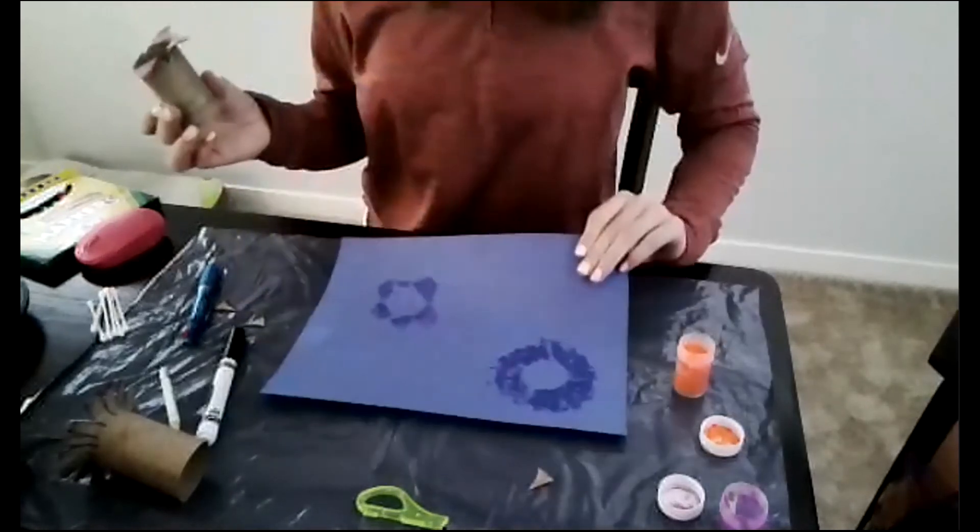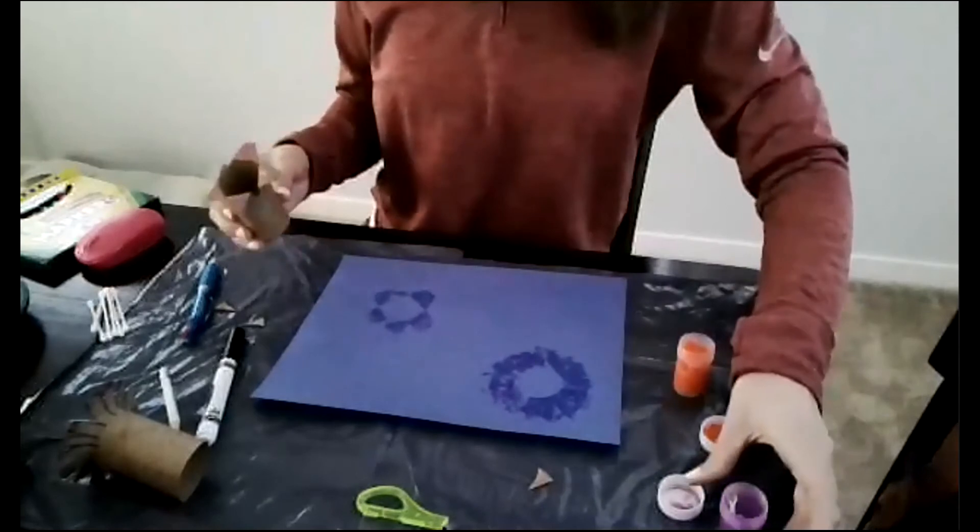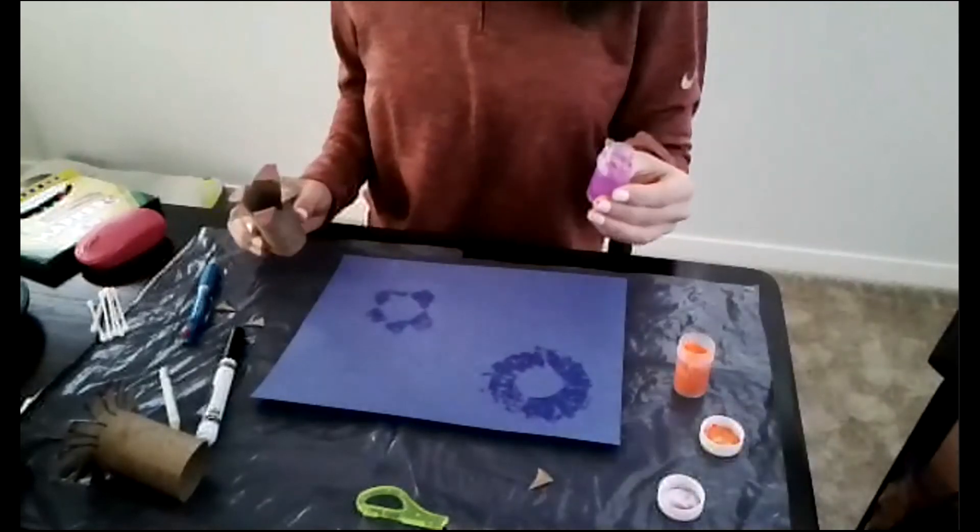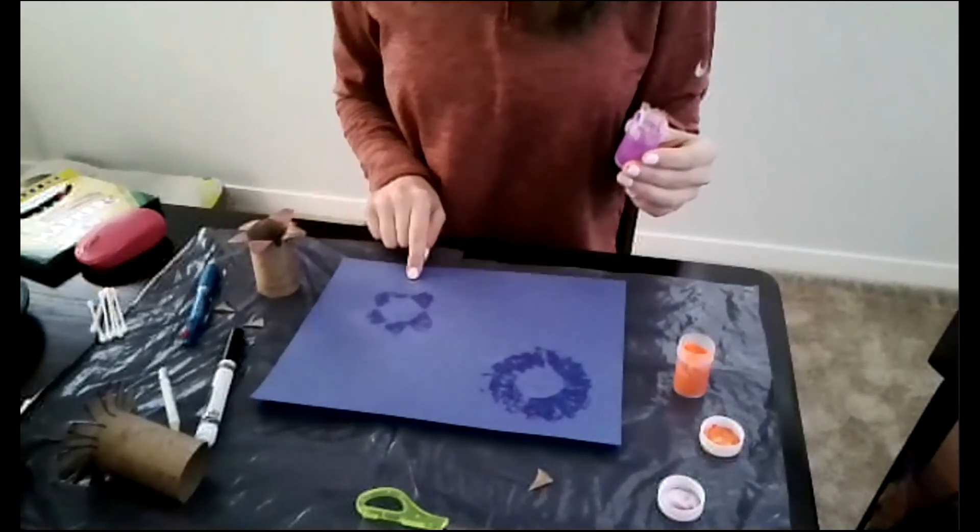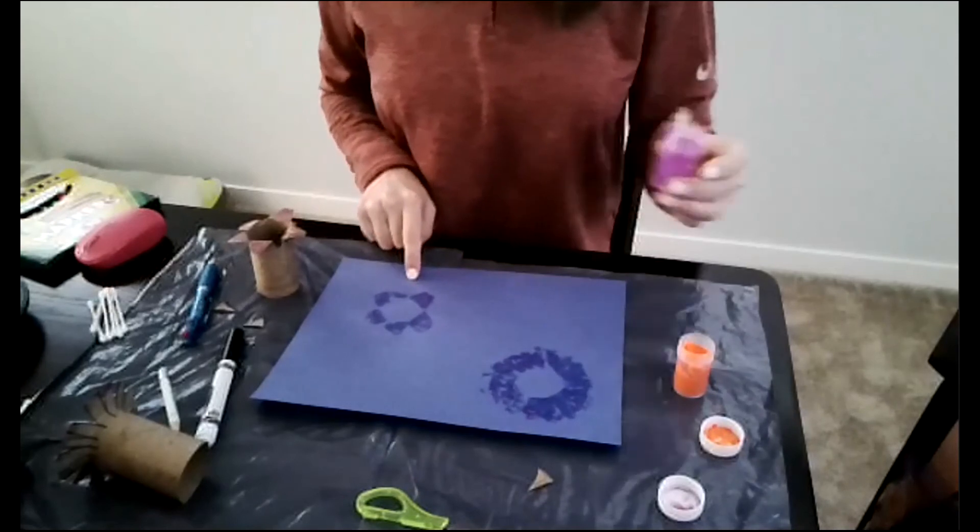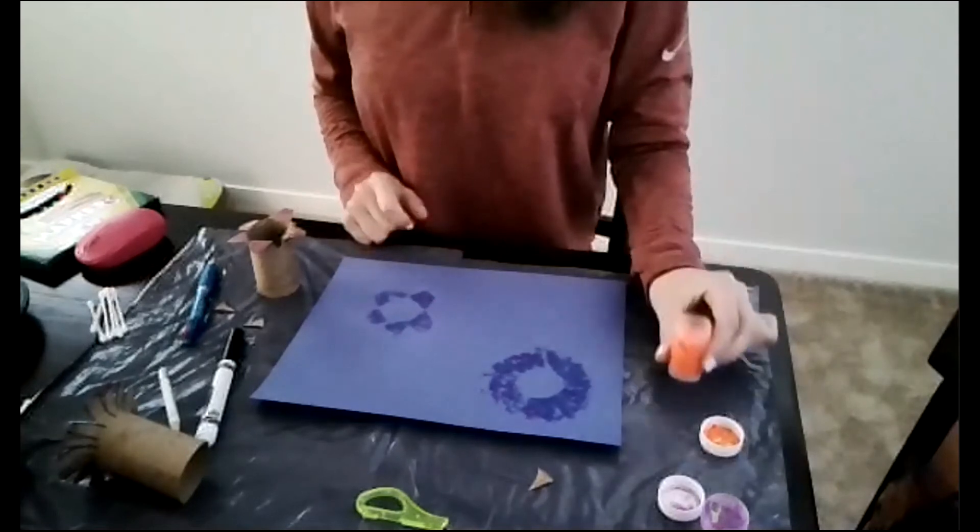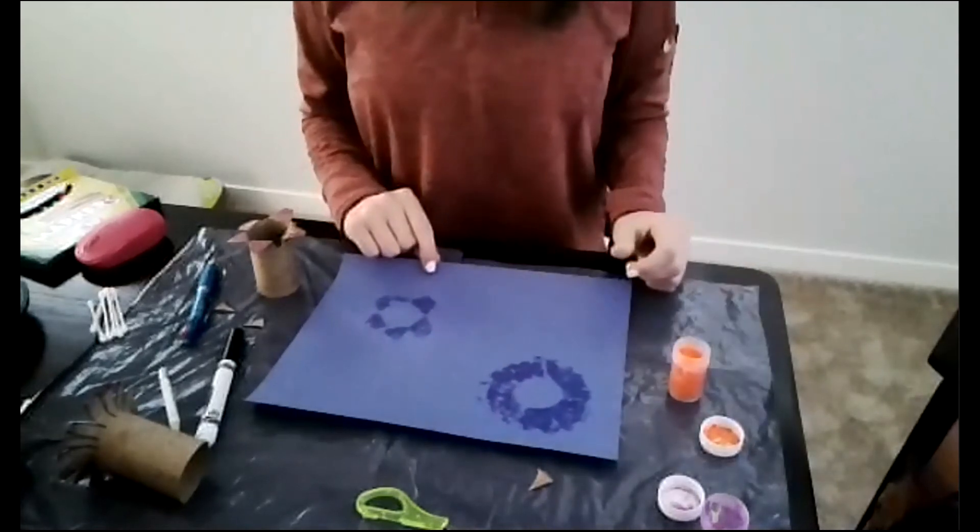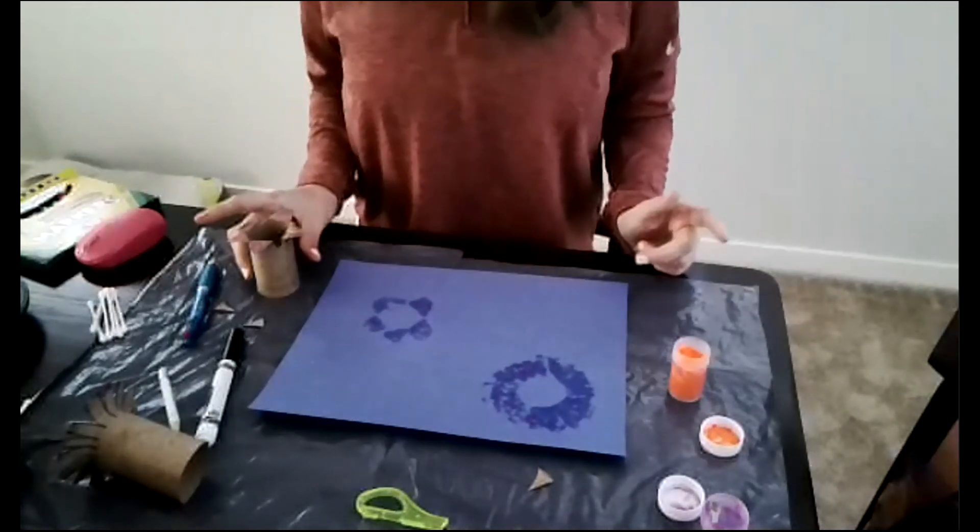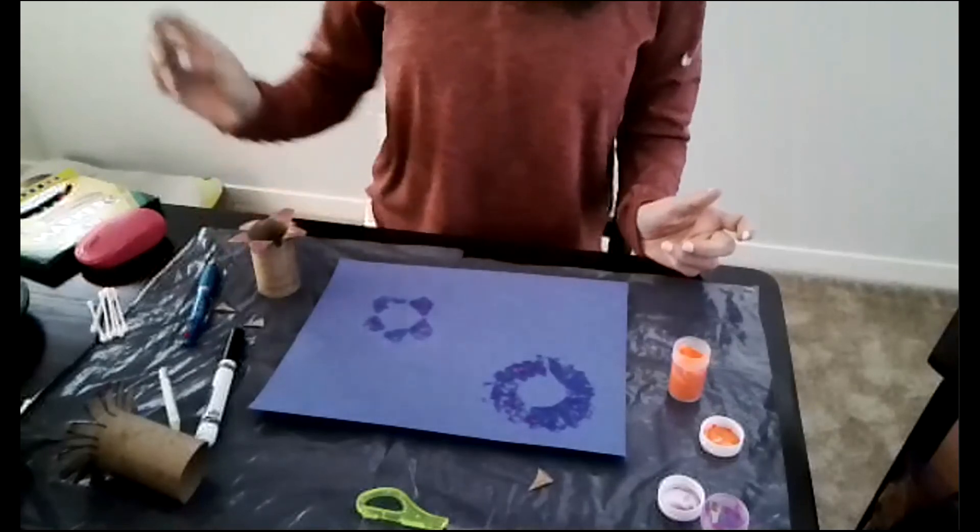Stamping every side to make a nice flower shape. There you go. And I might not have done the best job choosing my colors because I chose purple paint and blue paper. So it doesn't really show up too much. So think about what colors of paint you got in your kit. And what color paper you would like to use so that your colors blend in or pop out as much as you would like them to.